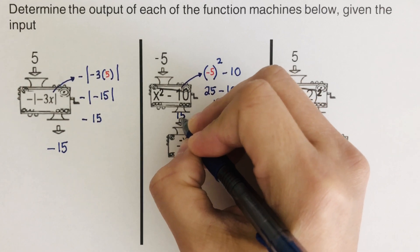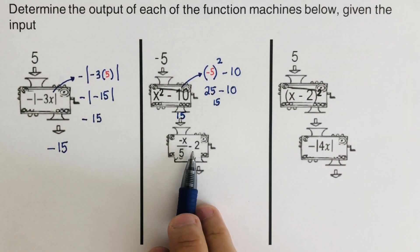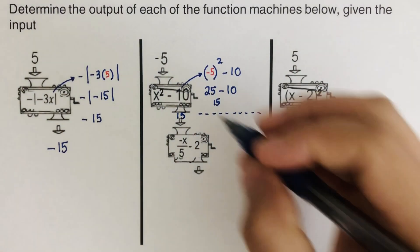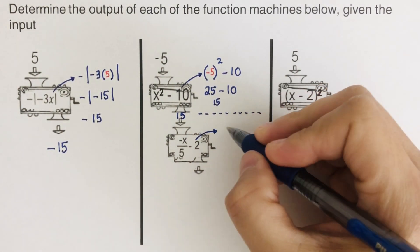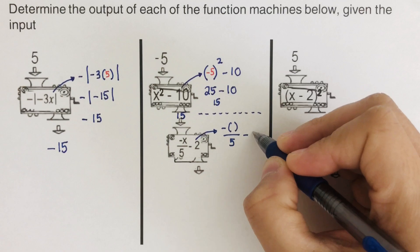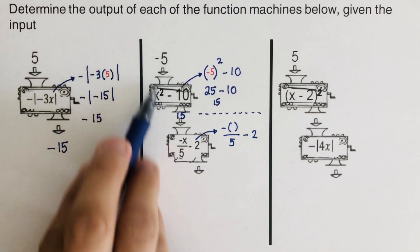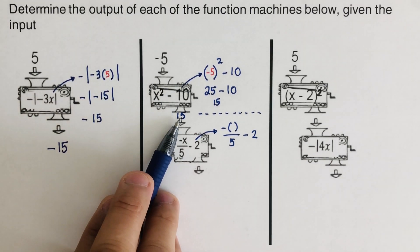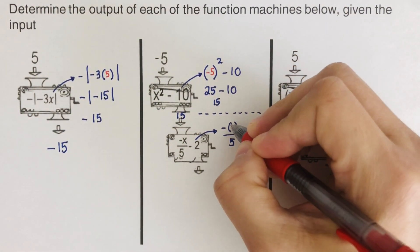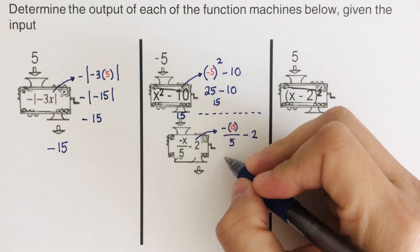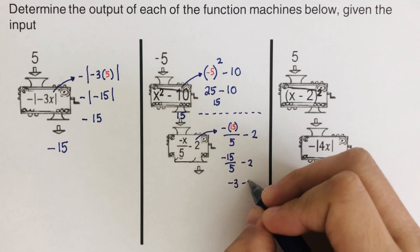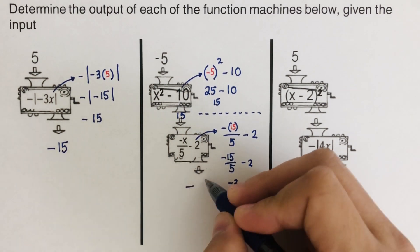The 15 coming out of the first machine becomes the input of the second machine. In the second machine we have: negative of parenthesis divided by 5, minus 2. The input is now 15, not negative 5, since the first machine already processed it. Plugging in 15: negative of positive 15 is negative 15, divided by 5, minus 2 — that's negative 3 minus 2. The final output is negative 5.